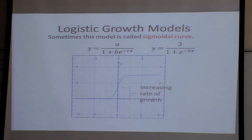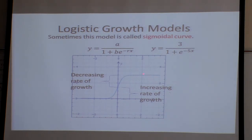Here we have an increasing rate of growth. Now we have a decreasing rate of growth. And then right there we actually have very little growth, or no growth at all. It just levels off, stays about the same.